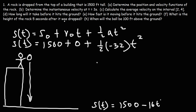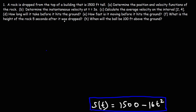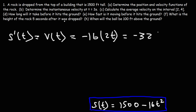Now we also need to determine the velocity function. To do that, we take the derivative of the position function. The derivative of the constant 1500 is 0, so it disappears, and the derivative of 16t squared is 32t. So we get v(t) = negative 32t. That is the velocity function describing the velocity of the rock at any time t as it falls.